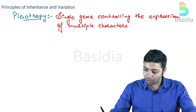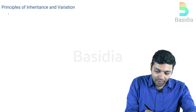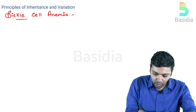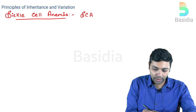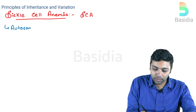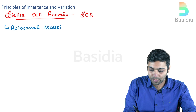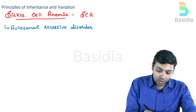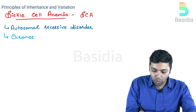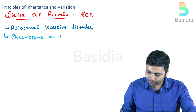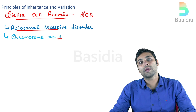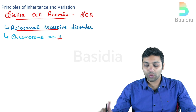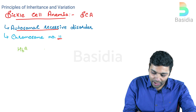One of the examples of pleiotropy is sickle cell anemia, also called SCA in short. It is an autosomal recessive disorder. The genes for this are present on chromosome number 11, and they are controlled by a set of two alleles: HbA and HbS.